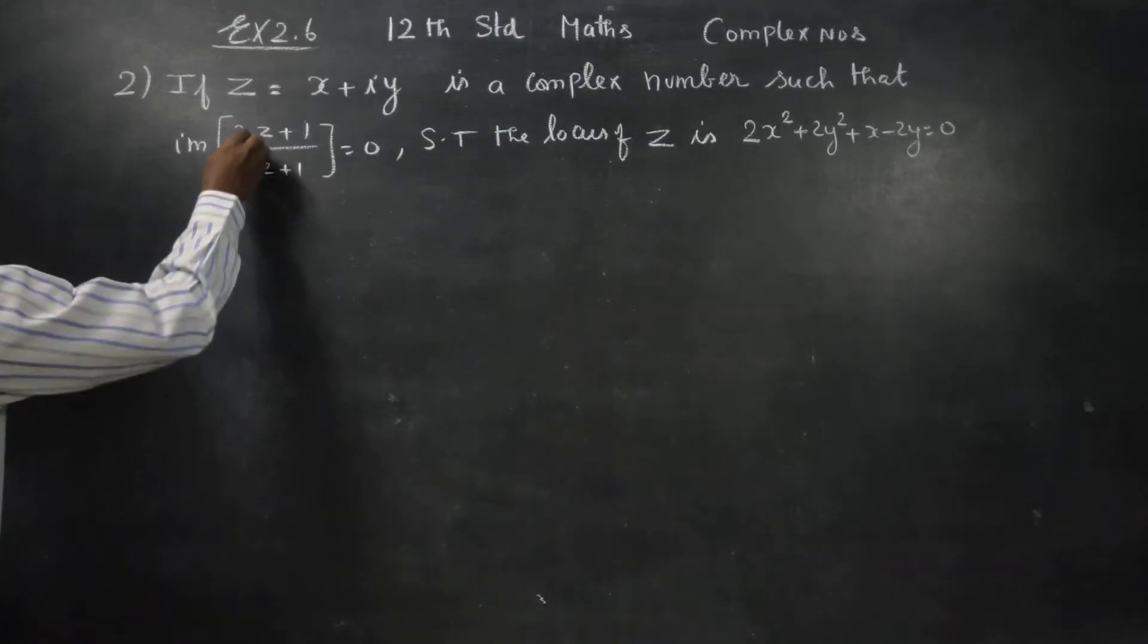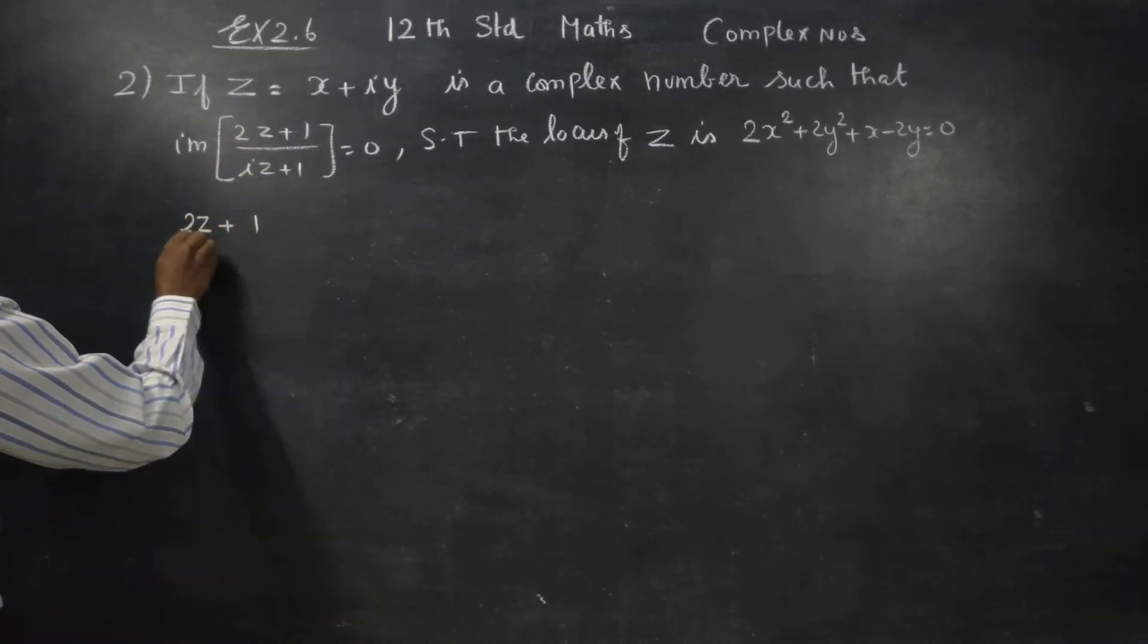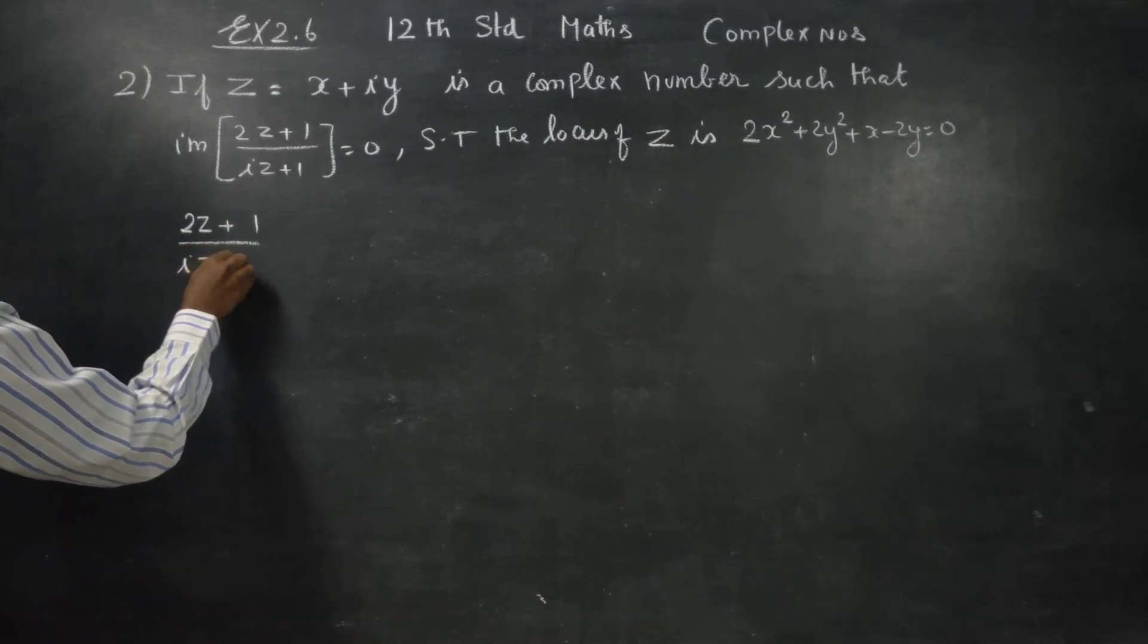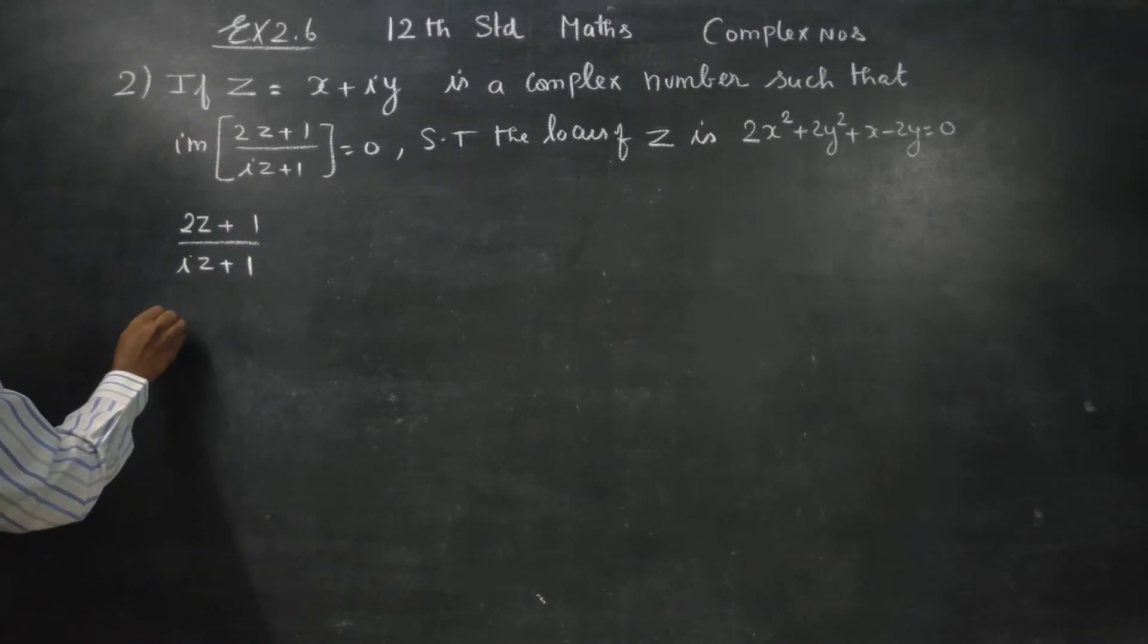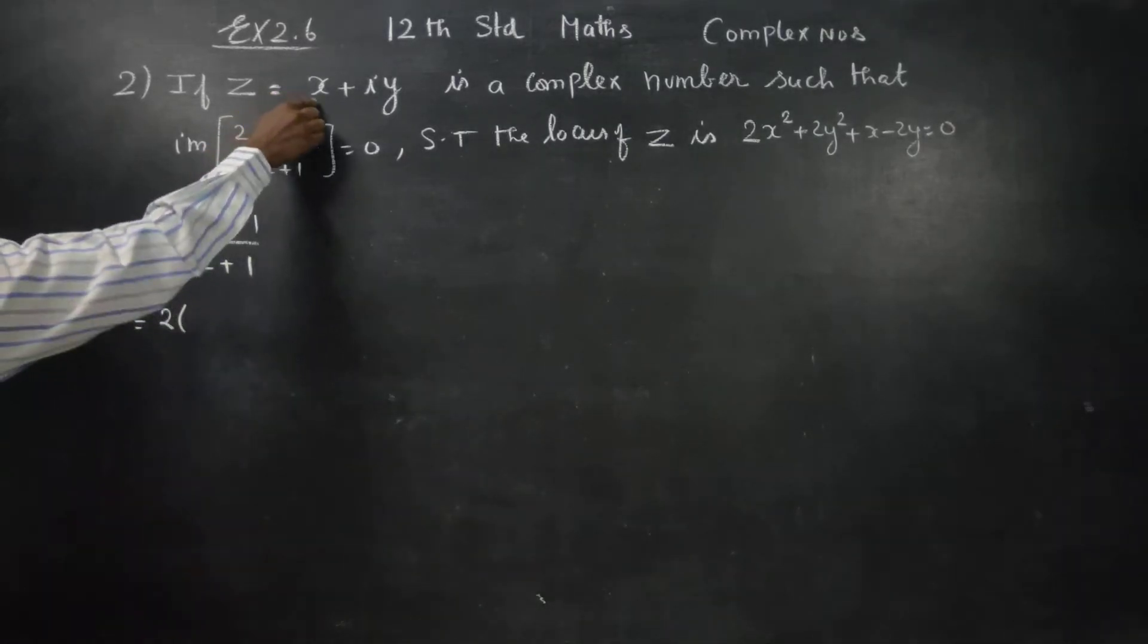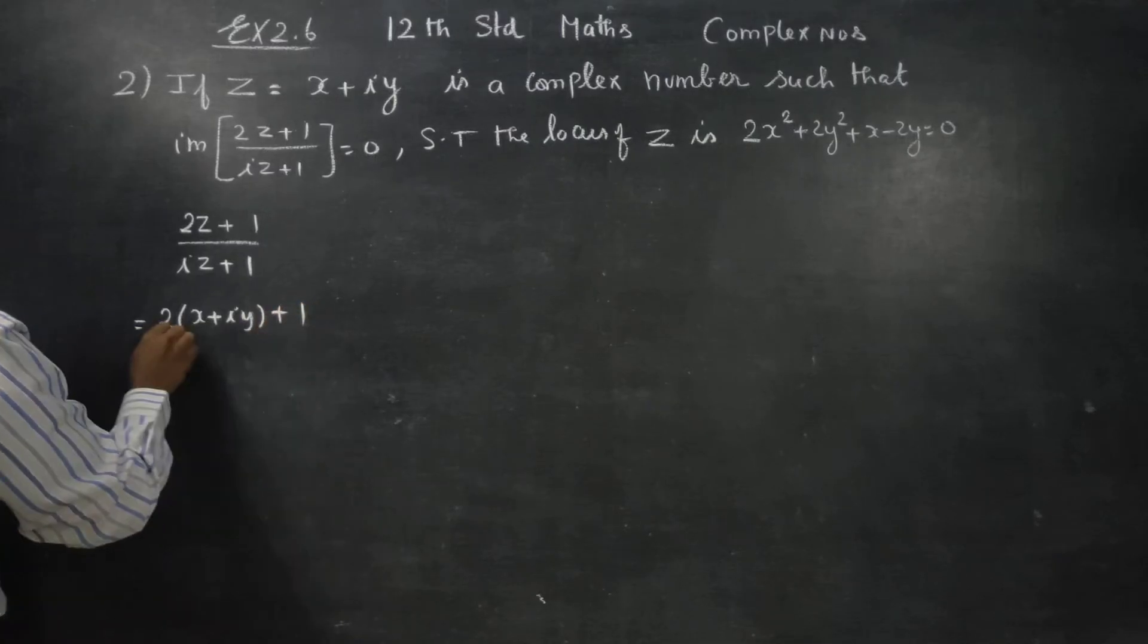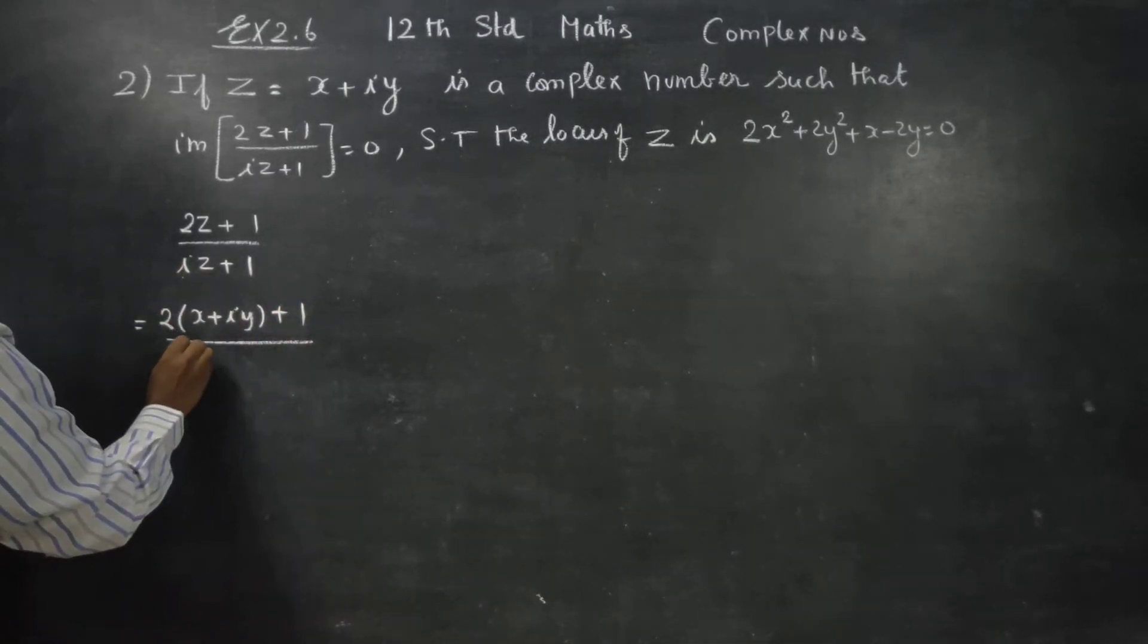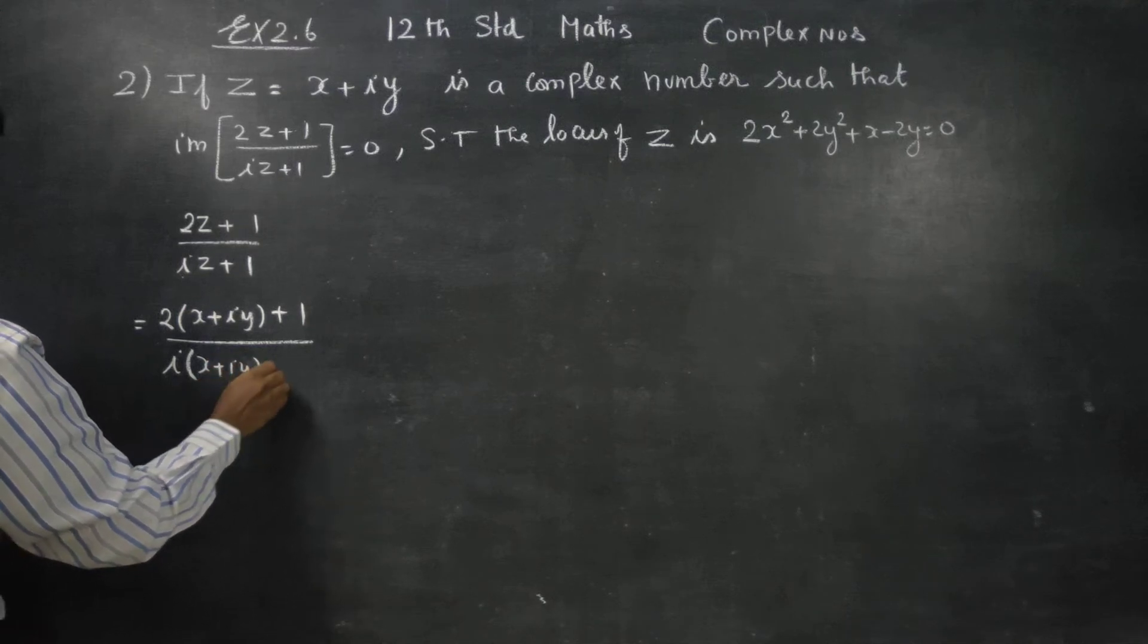We shall start with the sum 2z plus 1 by iz plus 1. 2 times z is x plus iy plus 1. i into z is x plus iy plus 1.